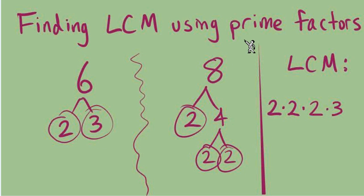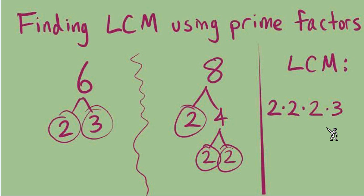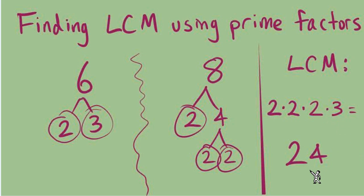There are no other prime factors — don't look at that 4, since we're using prime factors only with this method. I'm only interested in the circled numbers, like the dead ends of the tree. We've covered 2s and 3s, so we've finished building the LCM. The last step is to multiply all these numbers together: 2 times 2 is 4, times 2 is 8, times 3 is 24 — giving us the answer we expected, but arrived at using prime factors.